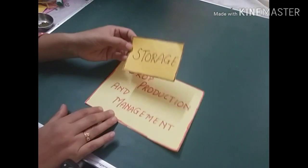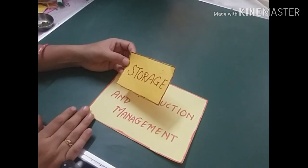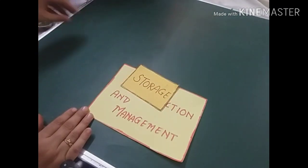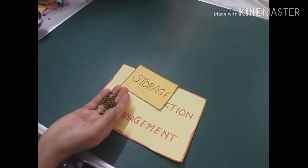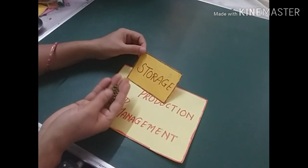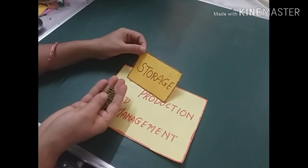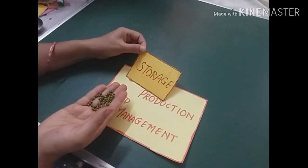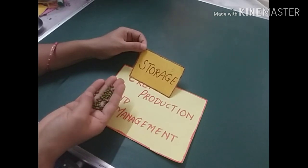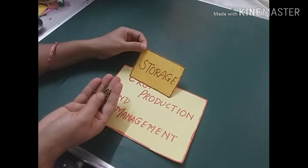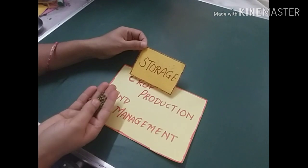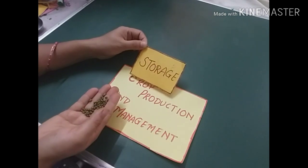The last step of crop production is storage. Crop grains must be kept safe from moisture, insects, rats, and microorganisms. Before storing, seeds are dried in the sun or in hot air to reduce moisture content, as moisture can attract different types of microorganisms, rats, and other animals. Drying prevents the attack of microorganisms and pests.